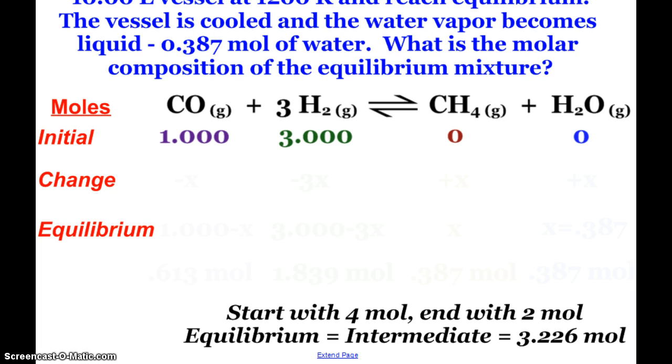So initially I have 1 mole of carbon monoxide, 3 moles of hydrogen, and no moles of my products. The change is going to follow the balanced equation, because when this reaction happens, whether it be at the particle level or at the mole level or anywhere in between, we've got 1 to 3 to 1 to 1 as far as the reacting ratio.